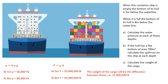To calculate the upthrust, rearrange pressure equals force over area to get force equals pressure times area. The hull has a flat bottom of 700 m². At 5 metres: upthrust = 50,000 × 700 = 35 million newtons. At 8 metres: upthrust = 80,000 × 700 = 56 million newtons. The weight of the cargo equals the difference: 21 million newtons, corresponding to about 2,100,000 kilograms of cargo.